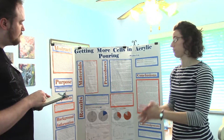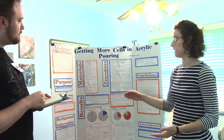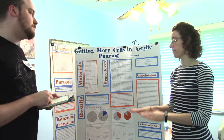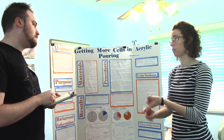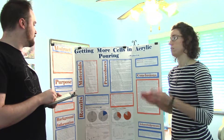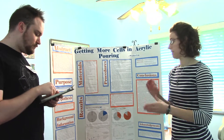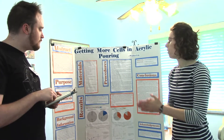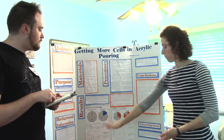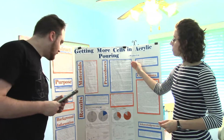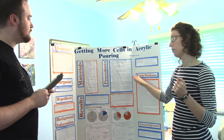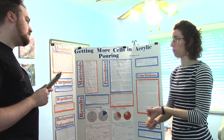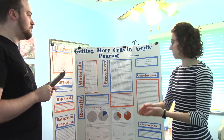I collected a bunch of materials for my project. The most important details were to include a pouring medium in the paint and mix it together so they were all the same consistency. I tried to use a controlled consistency for all of my paints, use the same amount, and put my paints in the same order. I used the same procedure for every single paint cup, except that I used more silicone oil with my later trials and increased it every time.